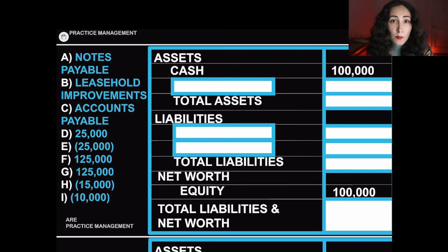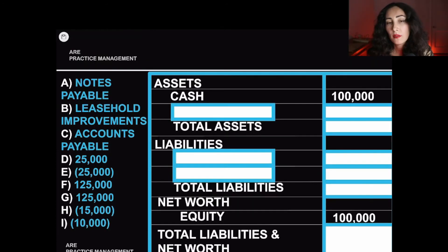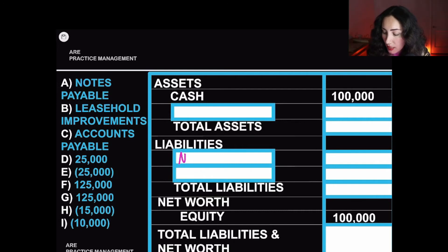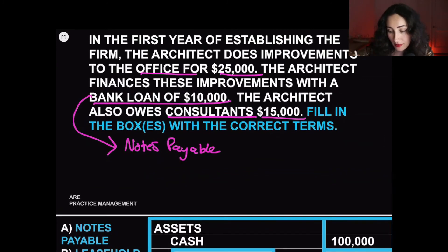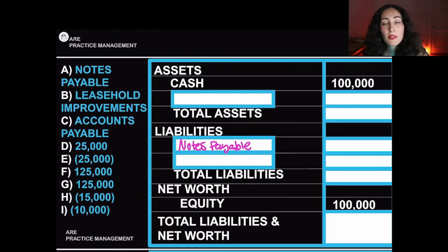Let's figure out where each of these terms go first, then attach the dollar amounts. Notes payable — if we know anything about accounts payable, it means we owe money. Notes payable means we've taken out a bank loan. When you owe someone money, that's a liability. Leasehold improvements — the architect spent $25,000 on improvements to the office. That's considered an asset because you're improving the space; that money is invested. Therefore we write that term under assets.